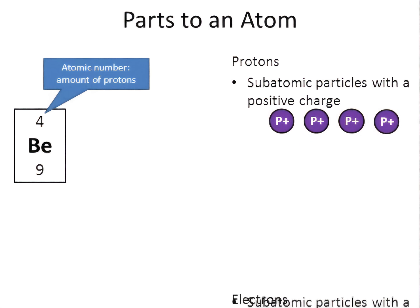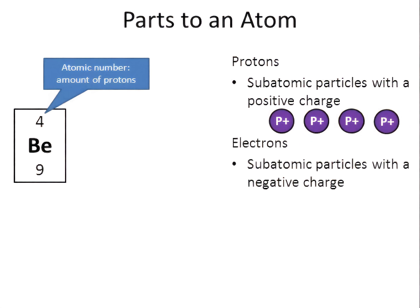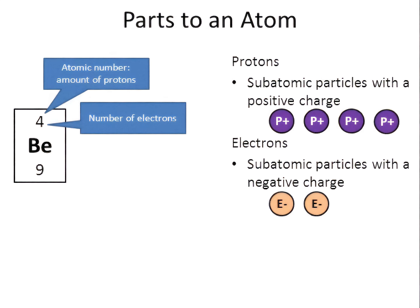Another part of an atom is what are called electrons. These are parts that have a negative charge. Usually the amount of protons is the same as the amount of electrons. So I now know that beryllium has four electrons.